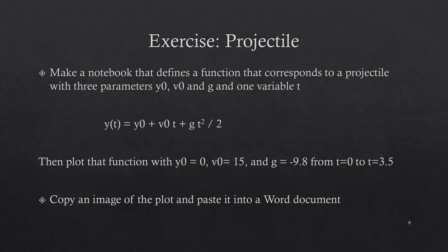Then plot that function with the parameters y0 equals 0, v0 equals 15, and g equals minus 9.8, and plot that function from t equals 0 to t equals 3.5. That should be a parabola that arcs up and then arcs back down.